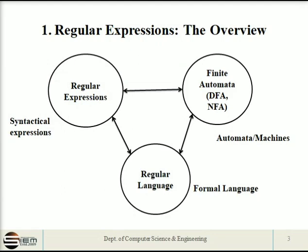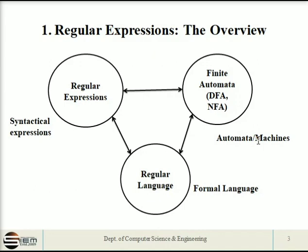Regular expressions can be converted into finite automata and vice versa. Regular expressions can also be converted into regular languages and vice versa. Finite automata, including both DFA and NFA, can be converted into regular language and vice versa. So regular expressions, regular languages, and finite automata are all mutually convertible. A regular expression is basically a syntactical expression, while finite automata is a machine that accepts strings and determines whether they are accepted or not.